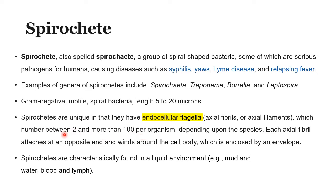The number of endocellular flagella can vary between 2 to more than 100 per organism, depending upon the species. Each axial fibril attaches at an opposite end and winds around the cell body, which is enclosed by an envelope. I will show you this in the next slide.